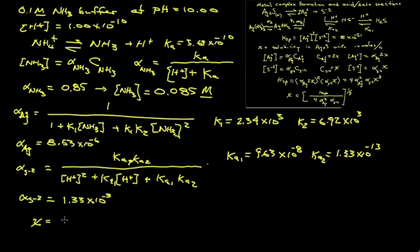So we're going to divide our Ksp, 8 times 10 to the minus 51, by 4 times alpha for silver, 8.53 times 10 to the minus 6 squared, and also in the denominator is alpha for sulfide, 1.33 times 10 to the minus 3, and we take the cube root of that.